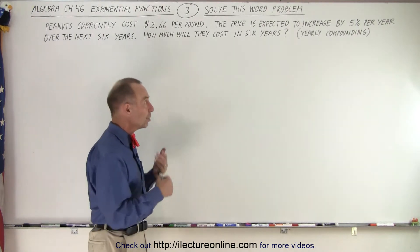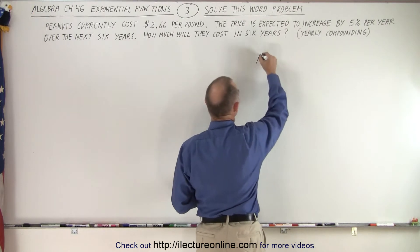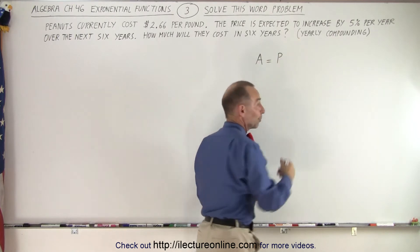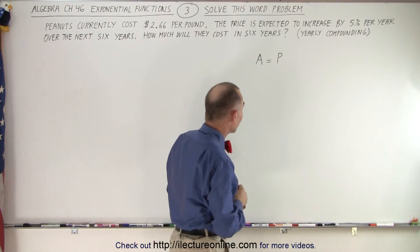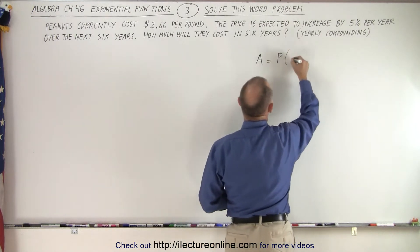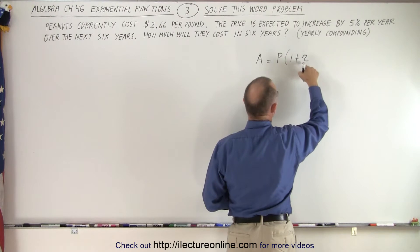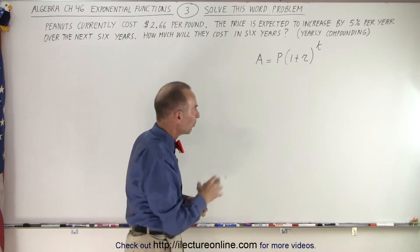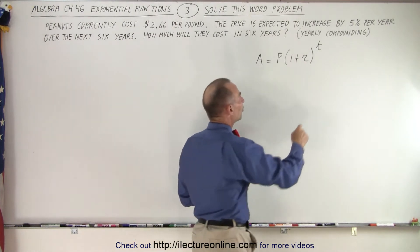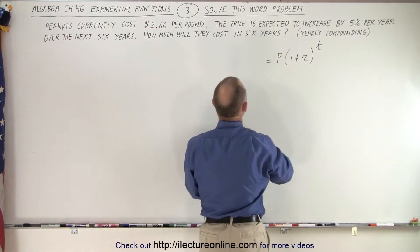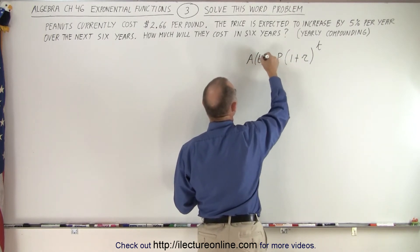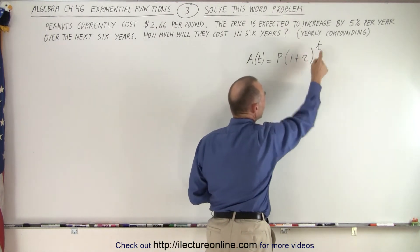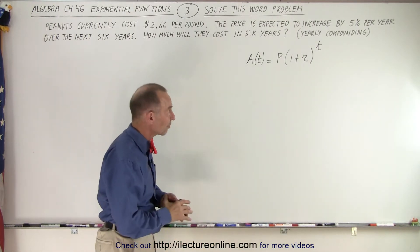We need an equation. The amount that peanuts will cost in six years is equal to the current price — or principal, if we're talking about banking — times 1 plus the rate of increase, r, raised to the t power. This is an exponential function where the variable is t, because the amount A is a function of t. P is a constant, r is a constant, and t is the variable — in this case, t is used for time.